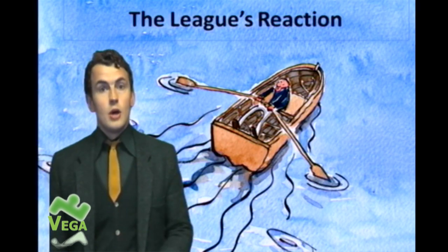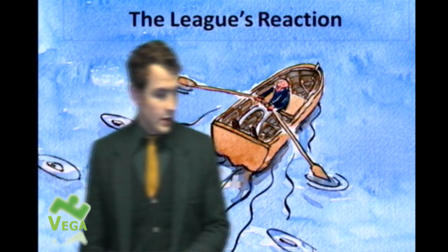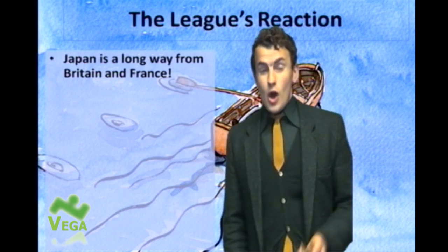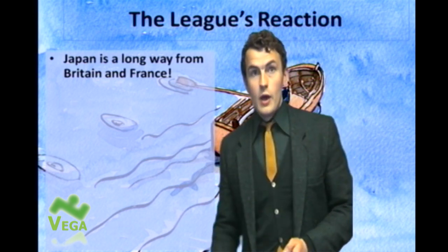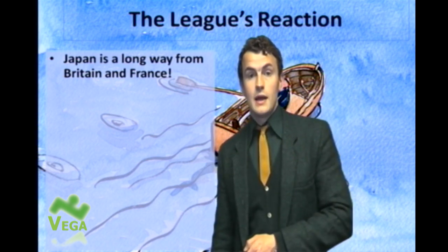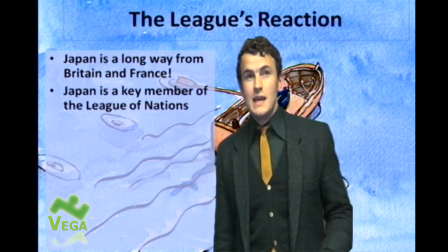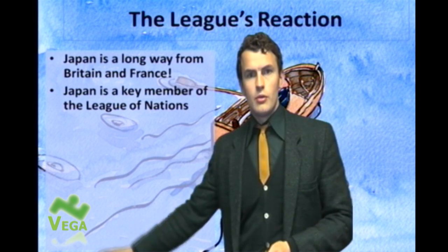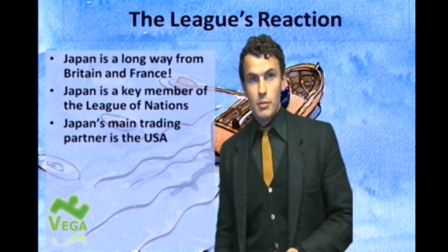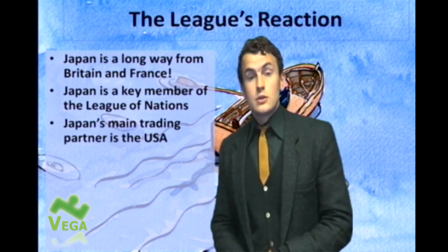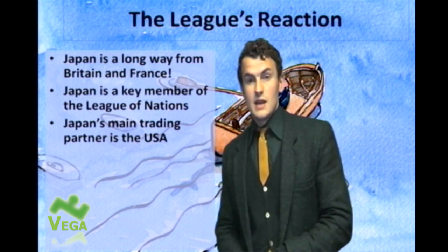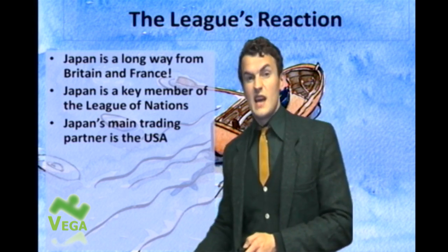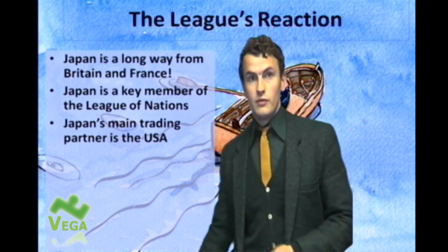Clearly there was international uproar, and the League reacted in the following ways. First of all, there was not a great deal they could do. Japan was a long way from Britain and France, who were the other key players in the League. Japan was also a key member of the League itself, so it was almost like telling one of your friends off for having done something wrong — they're not necessarily going to listen. Economic sanctions were useless because Japan's main trading partner was the USA, so Britain and France saying this was wrong meant little — Japan could still trade with the USA.